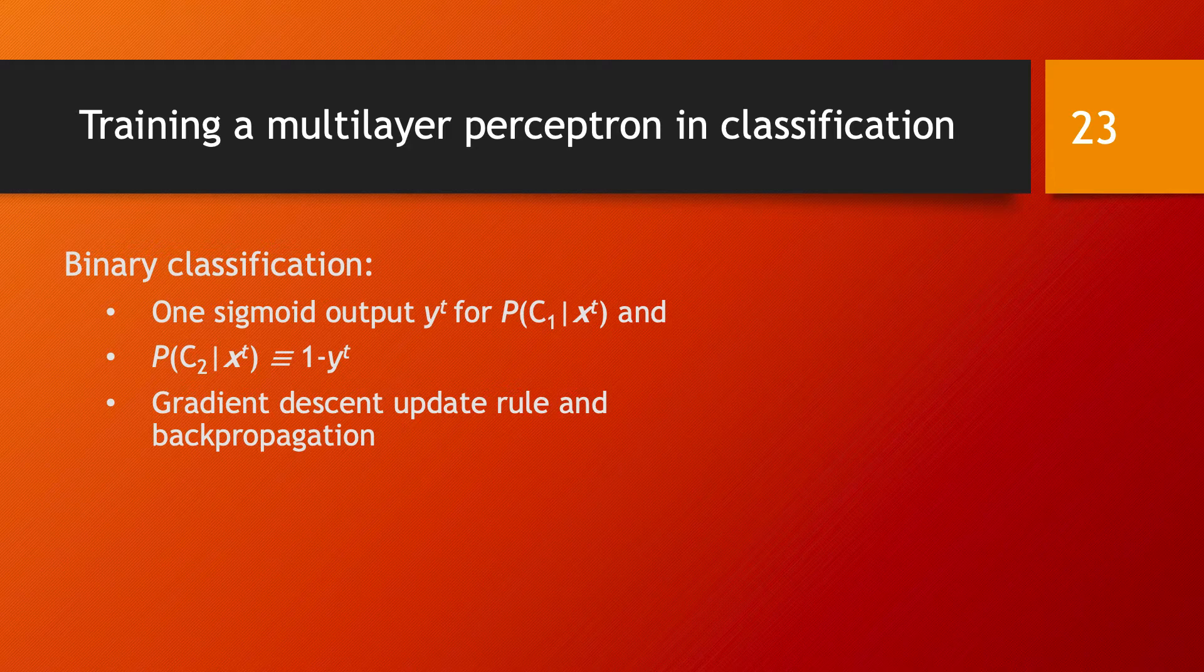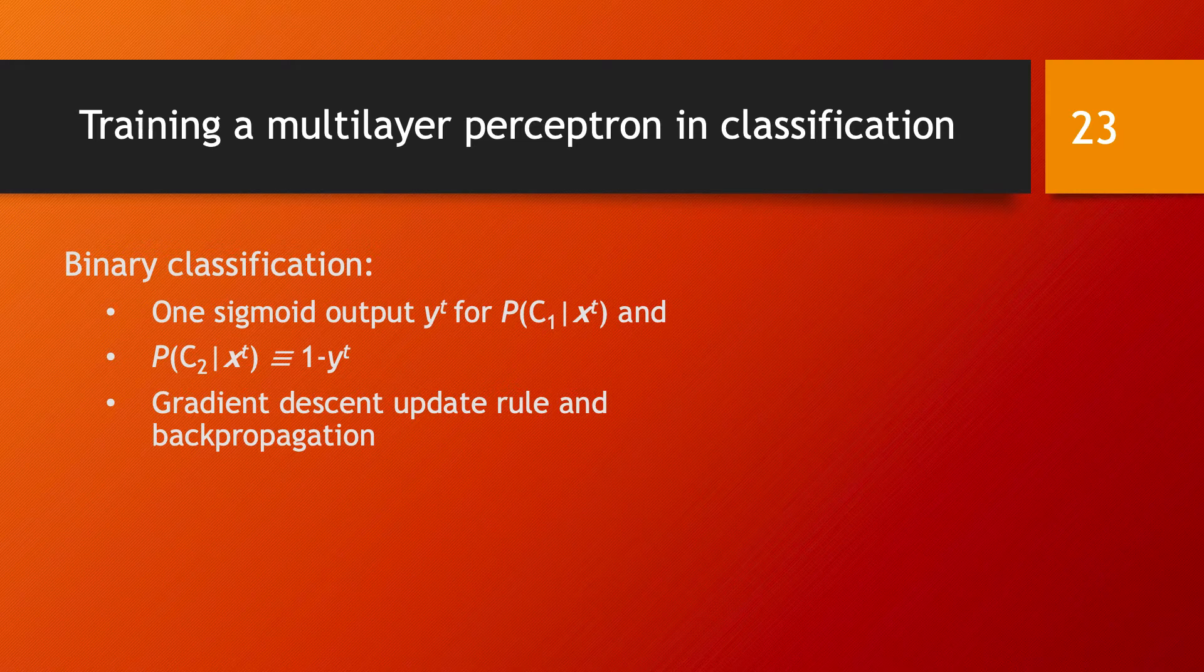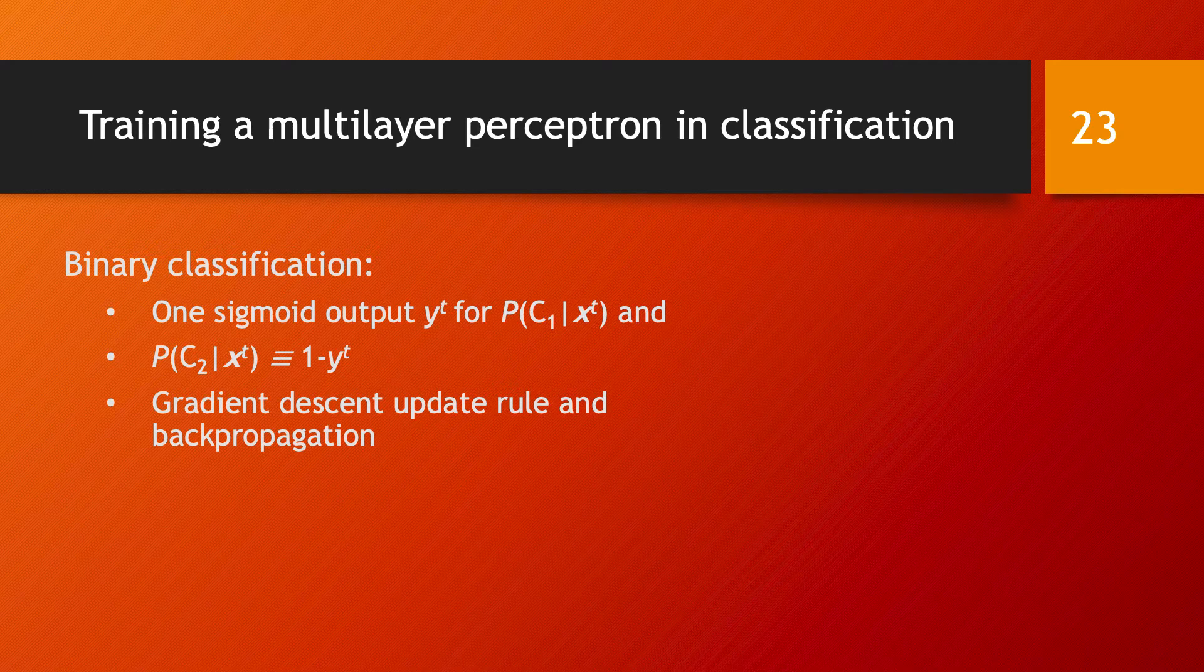We have this multi-layer perceptron with one hidden layer, and to distinguish between the two classes for a given data point, it's enough to think about the output in terms of a sigmoid function.